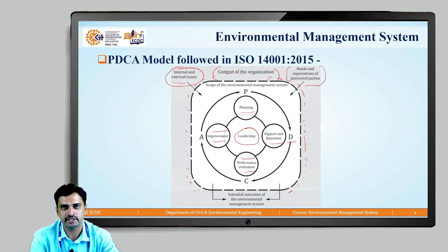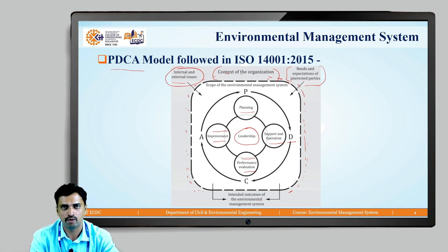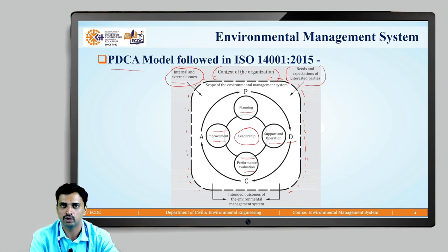For an organization, it also needs to consider the needs and expectations of interested parties. Together, the internal and external issues, the needs and expectations of interested parties, and the physical features, functions, and processes of the organization form the context of the organization. Context of organization basically specifies the area or the scope of the Environmental Management System. This is how the PDCA model is followed in ISO 14001-2015 for the implementation of Environmental Management Systems. Thank you very much for this session.